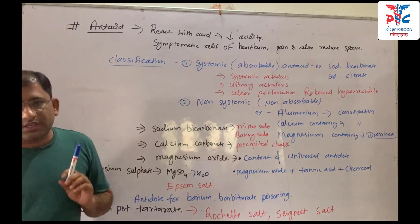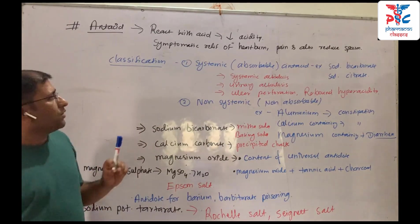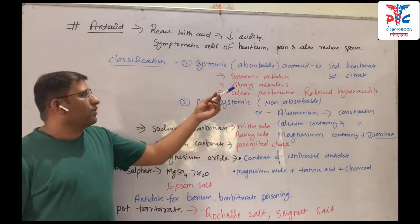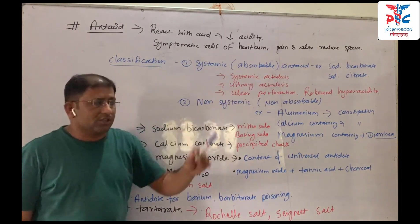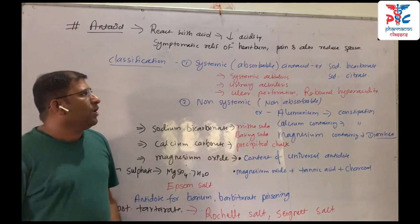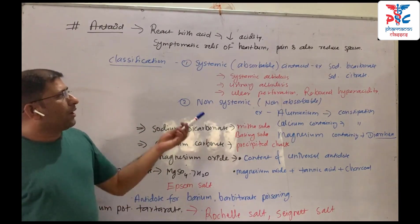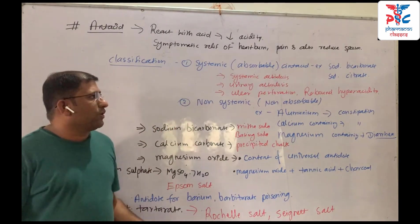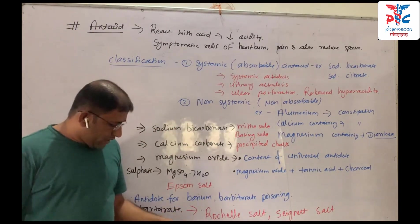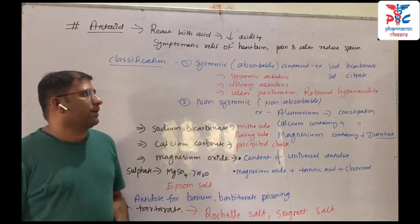If the systemic pH is increased, the alkalemia of the blood is increased, and the sodium and blood pressure are also increased. Examples of systemic antacids are sodium bicarbonate and sodium citrate.